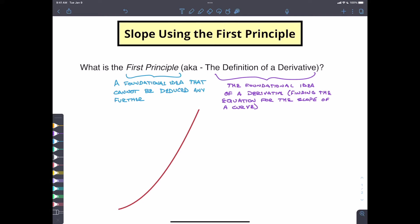Some places, some parts of the world call this using the first principle. Other parts of the world call this the definition of a derivative. But either way, what we're about to do is come up with that foundational idea to find the equation for the slope of a curve.